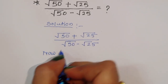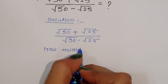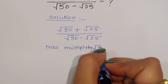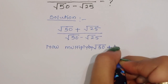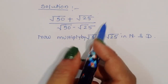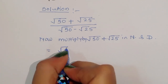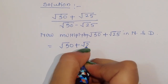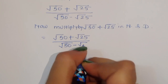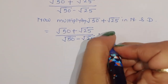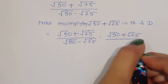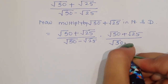Here we can do one thing: multiply numerator and denominator by (√50 + √25). So we have (√50 + √25) divided by (√50 - √25), times (√50 + √25) divided by (√50 + √25).